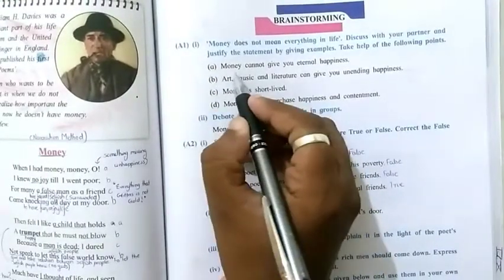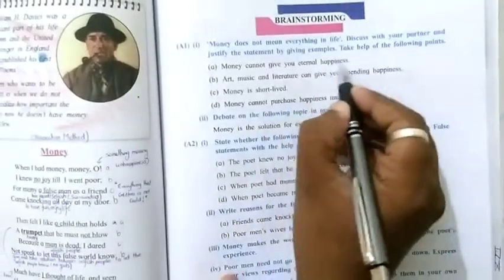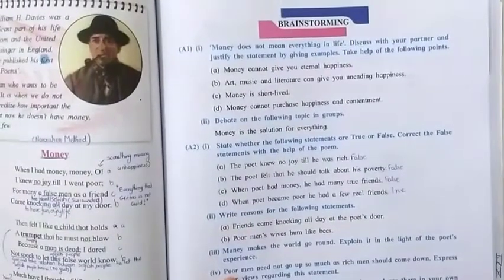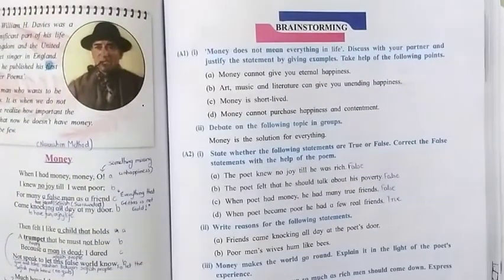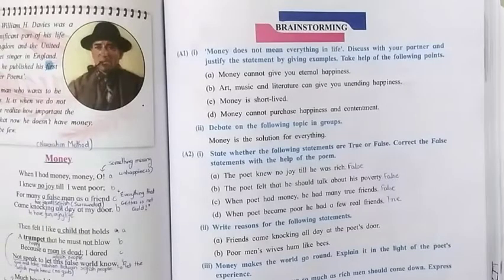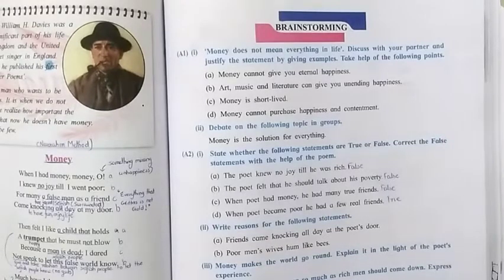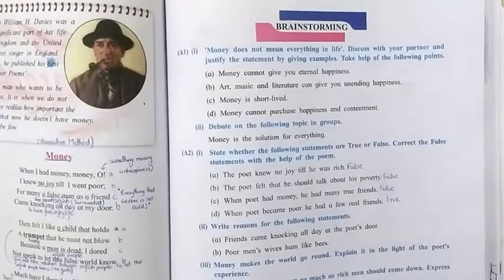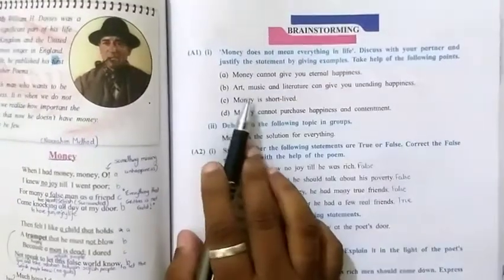For example, the first one is money cannot give you eternal happiness. The answer to this question is money gives us happiness but it is short lived. To have happiness we require people who care for us and want to be with us. This can be only our loved ones which is our family and true friends. They are always with us whether you have money or not, whether you are rich or you are poor.